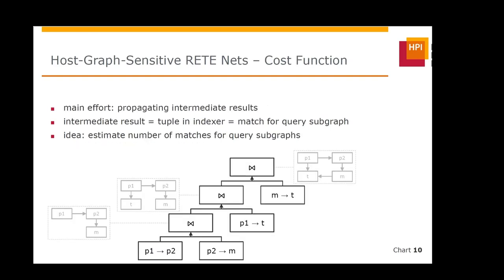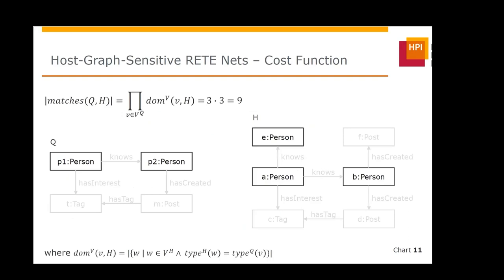Our technique is based on a host graph sensitive cost function for retinets. The main effort for executing a retinet stems from propagating intermediate results through the net — each intermediate result corresponds to a tuple in an indexer, which corresponds to a match for a query subgraph. Our idea is to estimate the number of matches for relevant query subgraphs. For a subgraph with only nodes and no edges, we compute matches as the size of Cartesian products of correctly typed host graph vertices. For example, two persons in a host graph with three persons yields exactly nine matches.